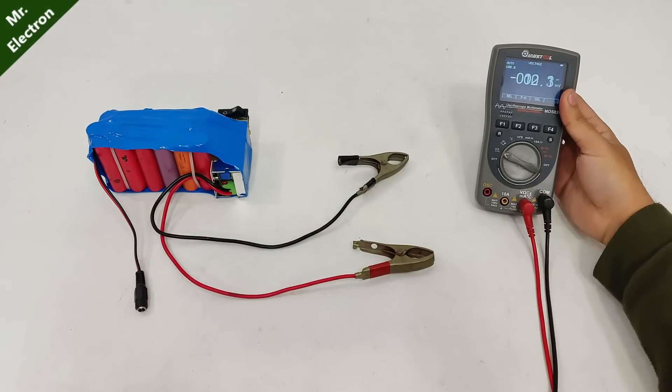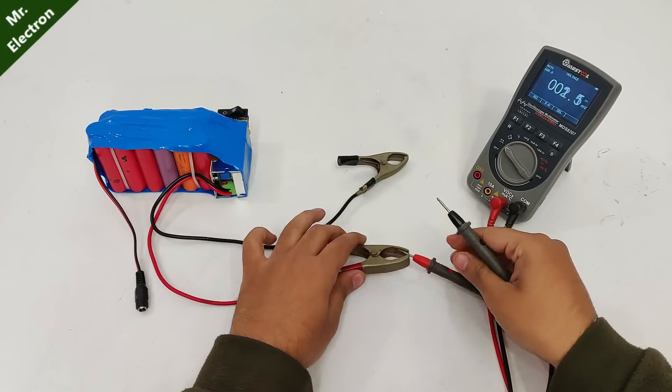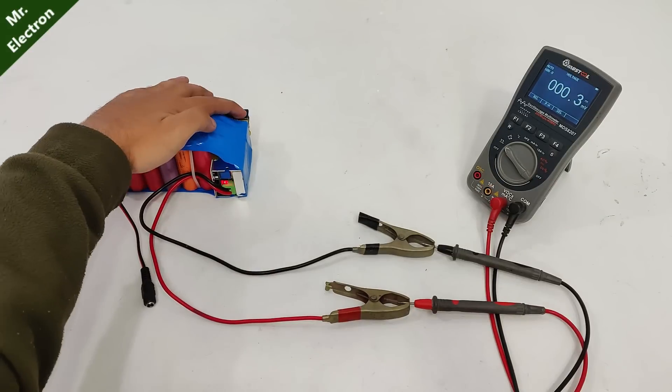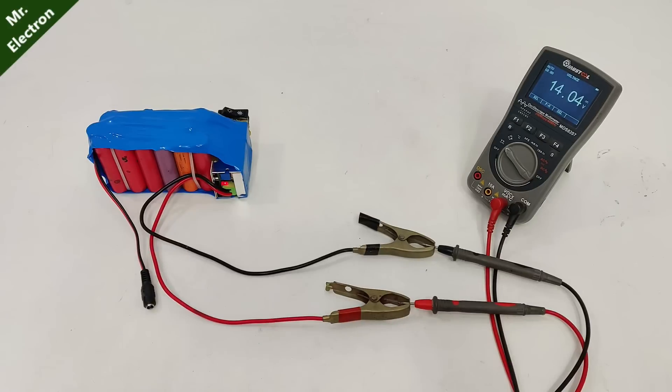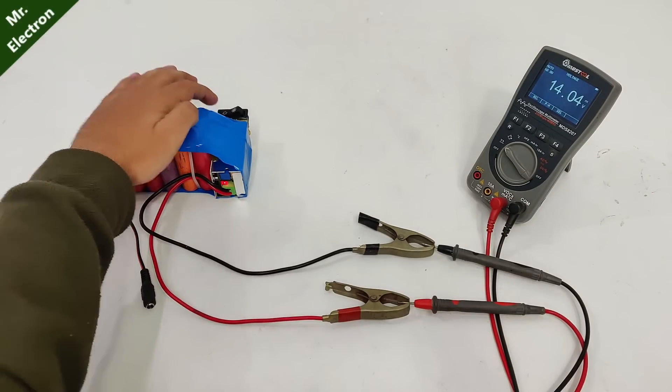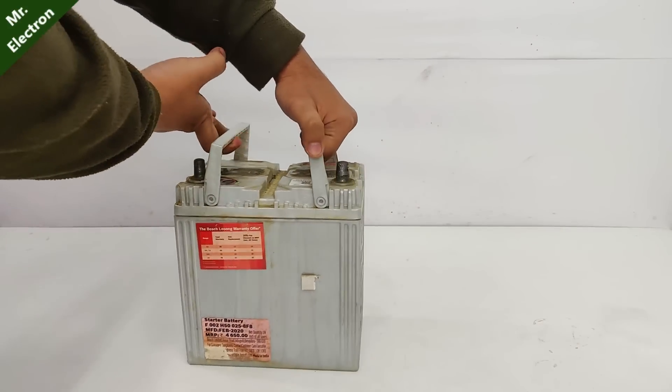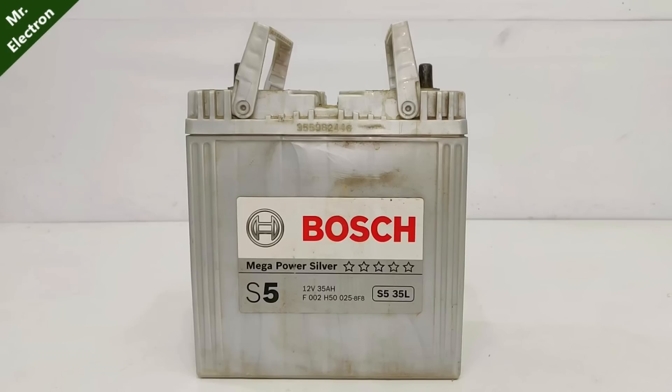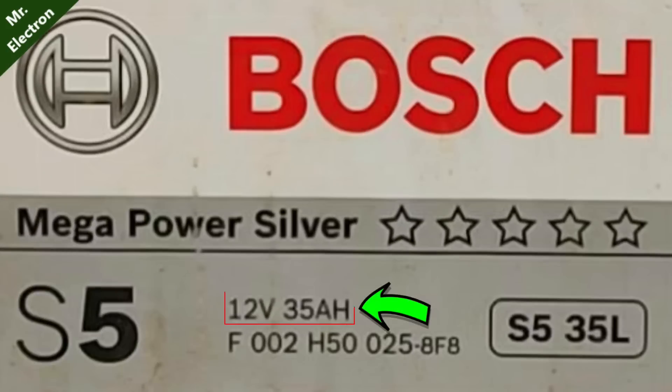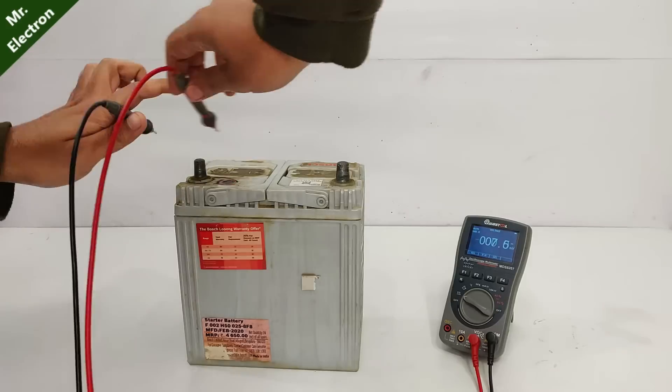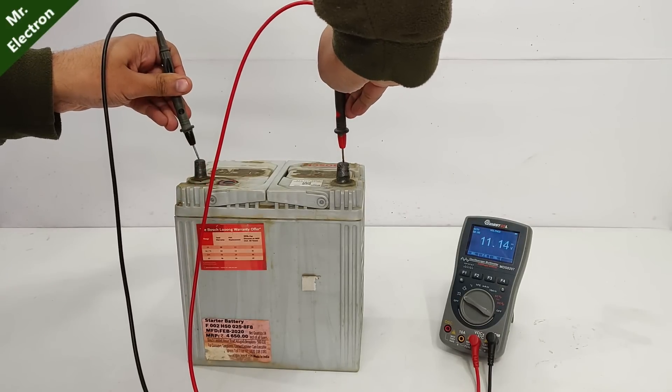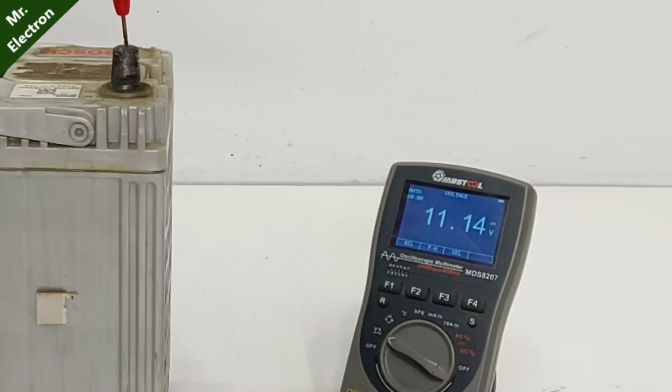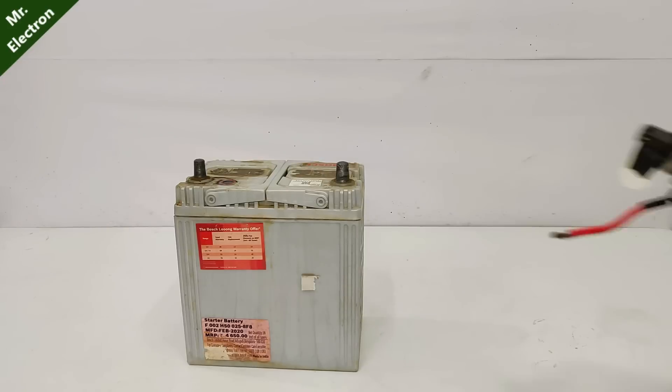So the construction part is fully complete and as you can see that now the output voltage is 14 volts which is good enough for charging your batteries. Now I have this dead old car battery and it's rated at 12 volts 35 ampere hour. Its open circuit voltage is 11 volts so it is completely discharged.